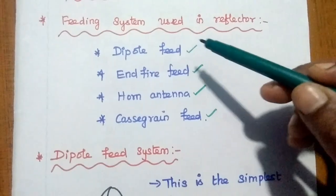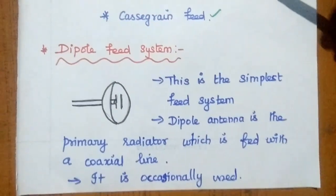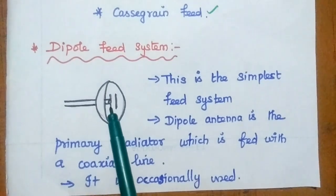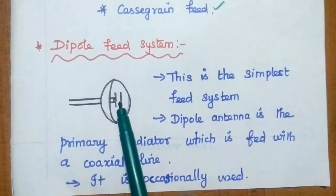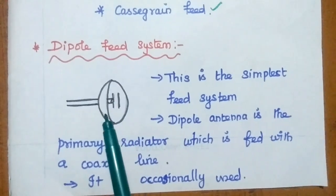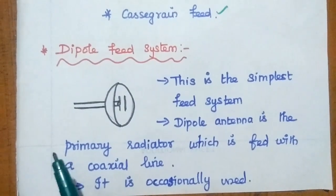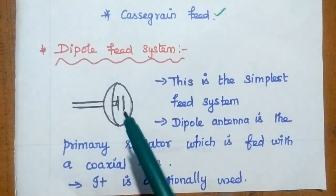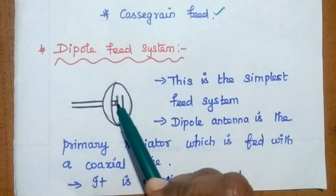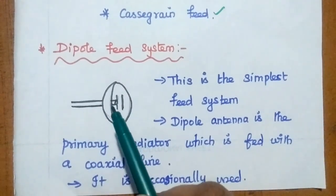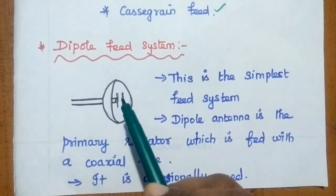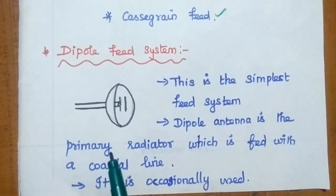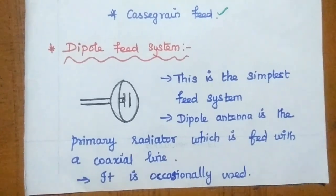In the dipole feed system, the parabolic reflector is connected with a dipole antenna. This is the simplest feed system. The dipole antenna is the primary radiator which is fed with a coaxial cable, by which we can radiate the signal towards the reflector. It is occasionally used, so practically we are not using this in many applications.